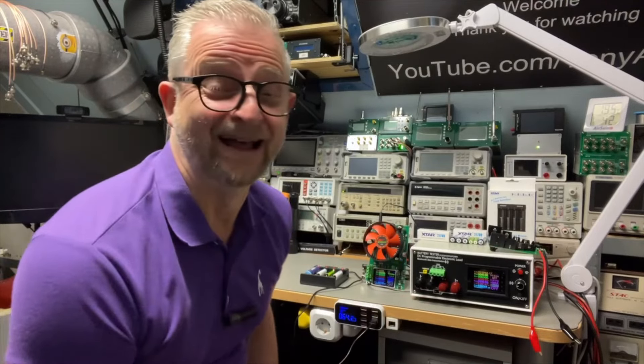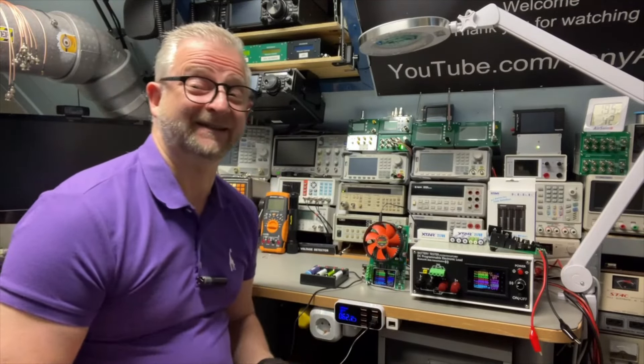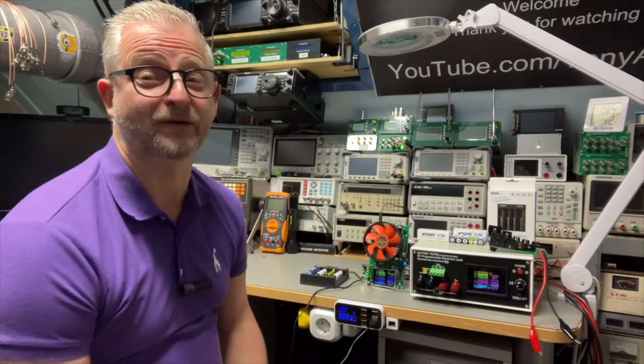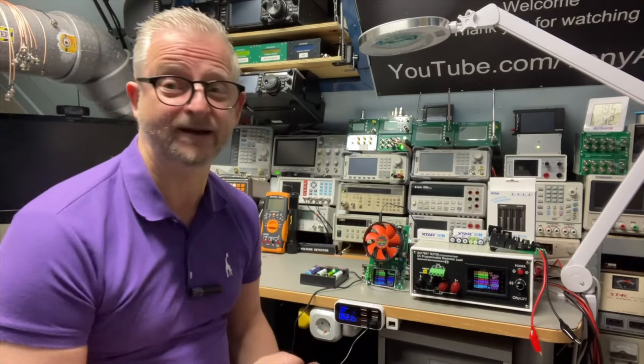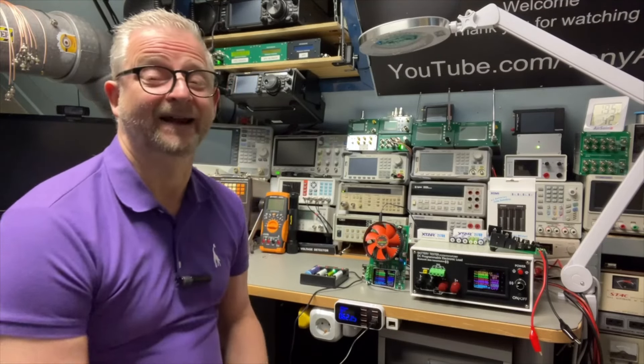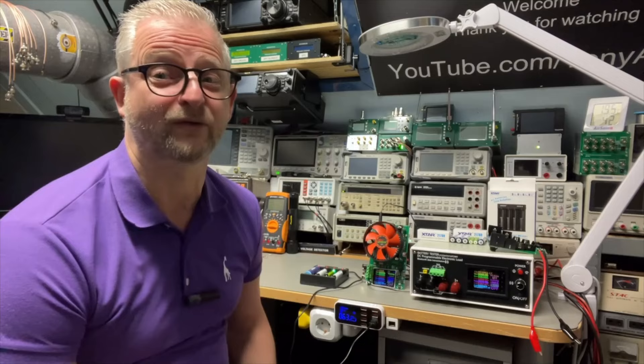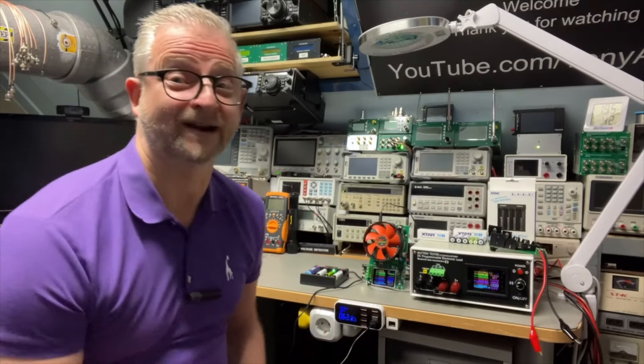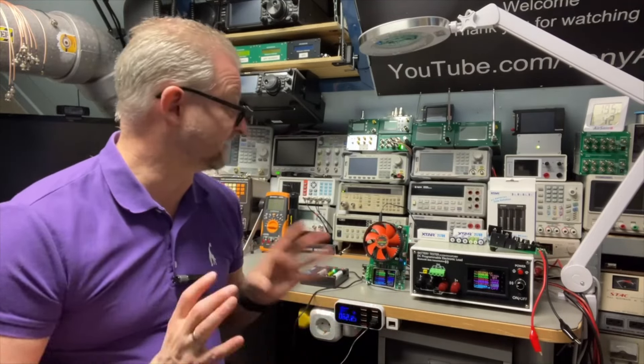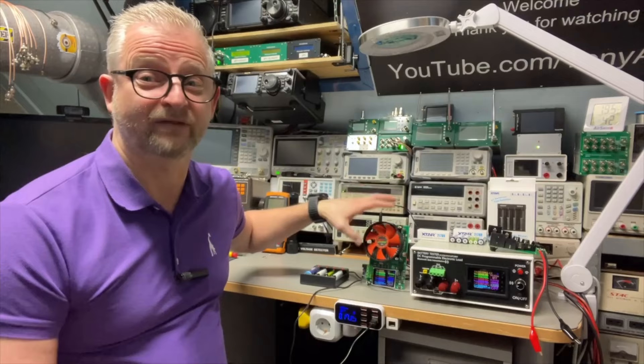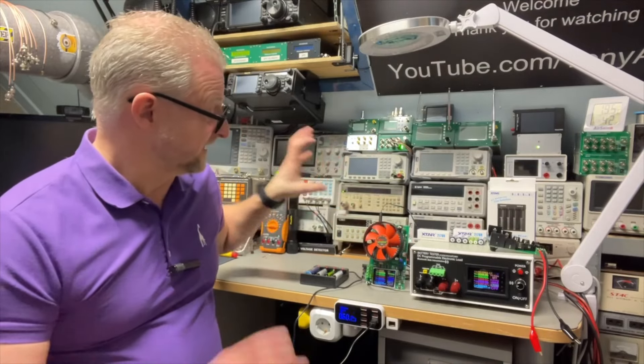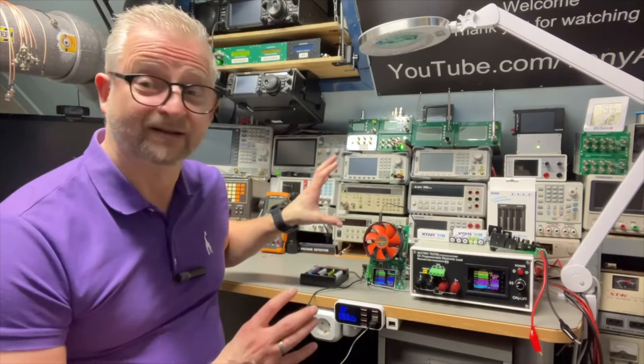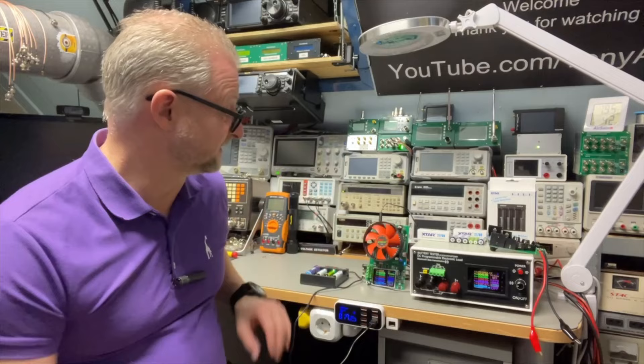Hello and welcome back. Today I have a battery tester electronic load from ATORCH, the DLB 600, based on the DL24MP. I already like the DL24 a lot, it's the one here.